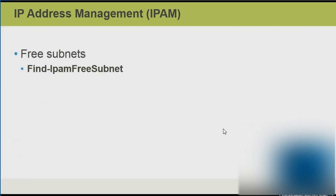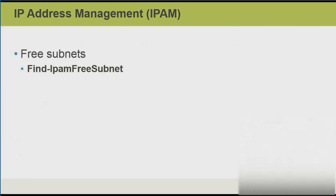There are some new PowerShell cmdlets related to IPAM in Server 2016. One of them is find-ipam-free-subnet. Given an IP block, this can return subnets that are available for allocation.